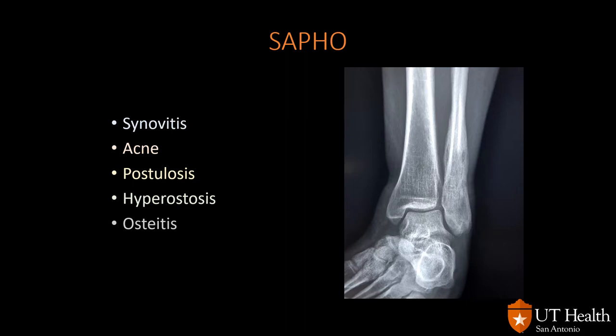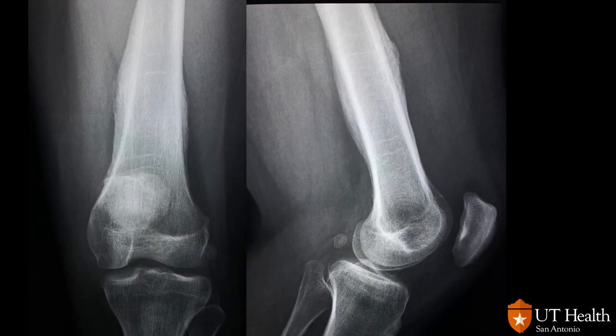The last condition is SAPHO syndrome, which stands for Synovitis, Acne, Pustulosis, Hyperostosis, and Osteitis. In imaging we see hyperostosis and osteitis — for example, periosteal reaction about the distal fibula. Hyperostosis and osteitis are characteristically seen at the clavicles and around the sternoclavicular joint. Another example shows periosteal reaction about the distal femur in a patient with SAPHO syndrome.